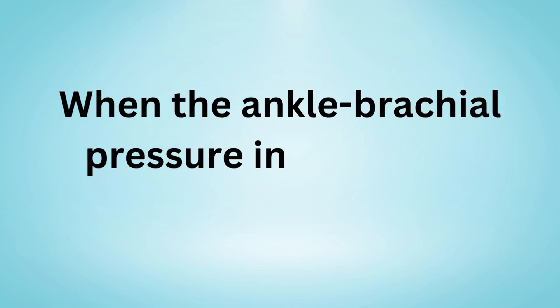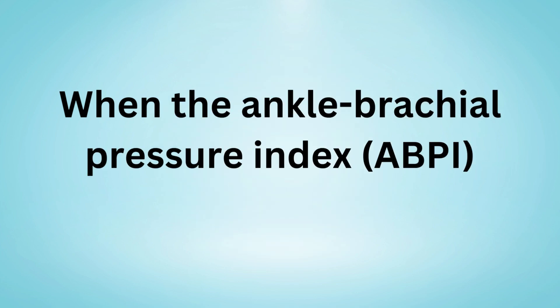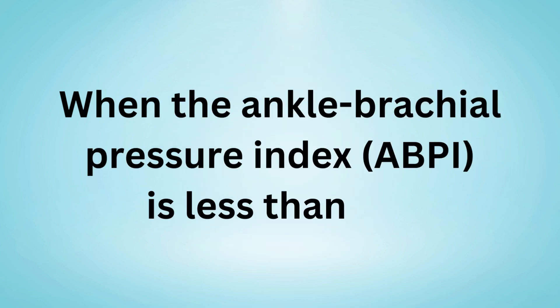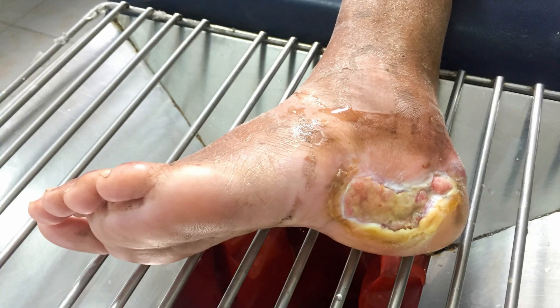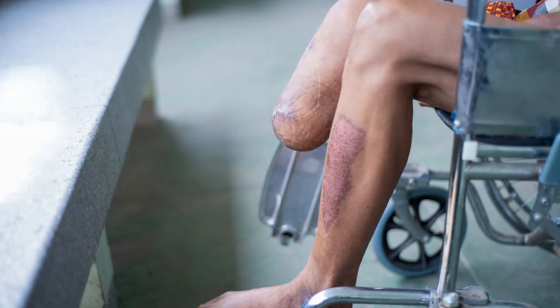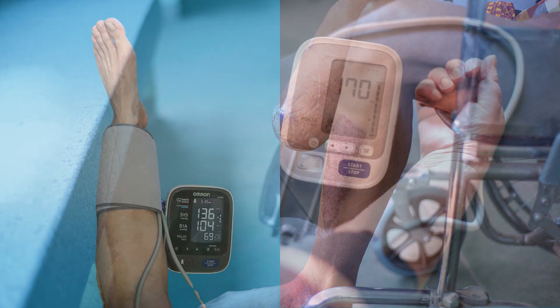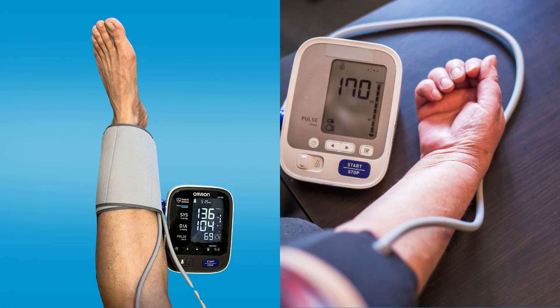When the Ankle Brachial Pressure Index, ABPI, is less than 0.5, the patient is at a greater risk of developing necrosis, or death of the tissue, in the lower limb, and subsequently amputation. In general, lower ankle pressure relative to brachial pressure signifies a more severe disease.